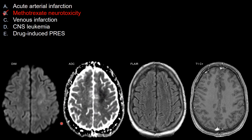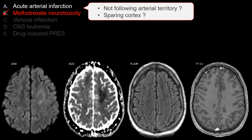Let's look at choices that do not work as well. Choice A, arterial infarction — it's strange that you don't have involvement of the cortex. You have restricted diffusion strictly involving the white matter, centricernal valley. So that would be strange for arterial infarction.